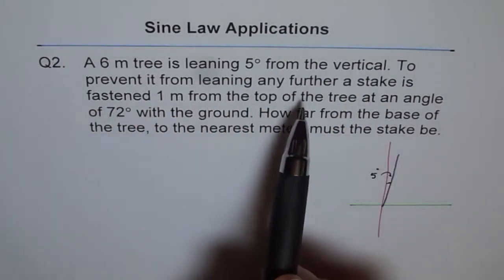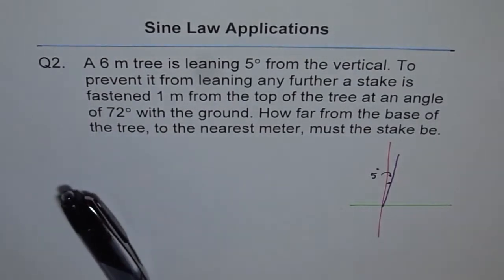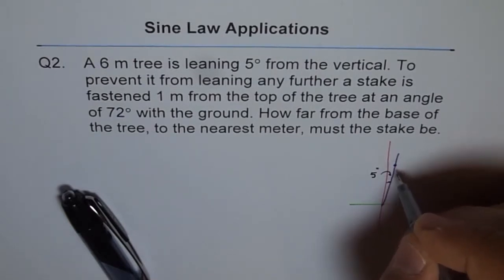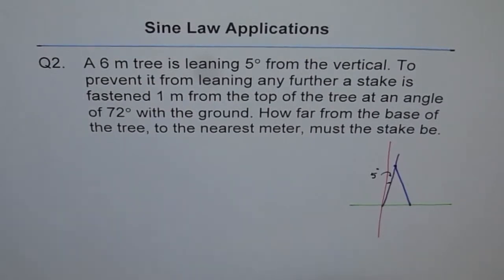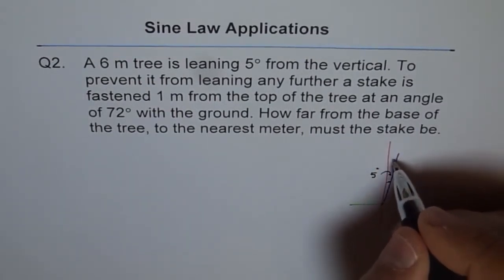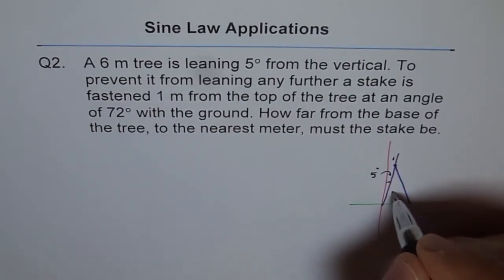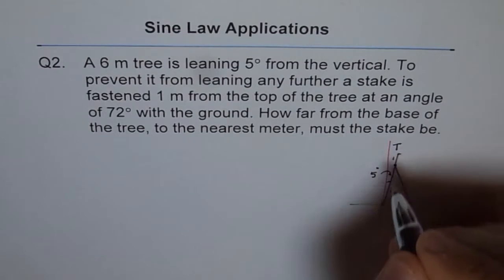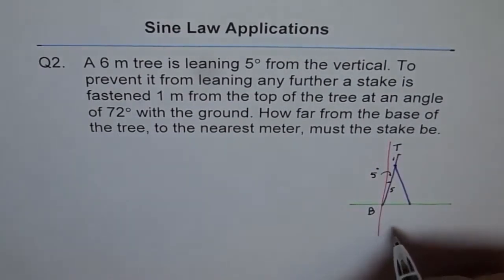A stake is fastened one meter from the top, so we'll mark that point — one meter from the top means five meters from the base, since five plus one equals six, the total tree length. That top point is labeled T and the base of the tree is labeled B.